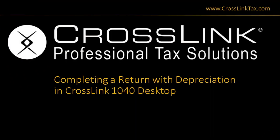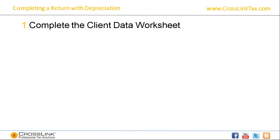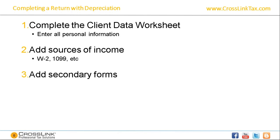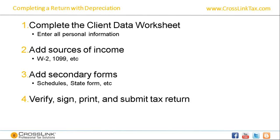Today we are going to be covering completing a return with depreciation in Crosslink 1040. The topics we will cover include how to complete the client data worksheet, entering all personal information, adding sources of income — anything related to W-2, 1099, and other sources of income — and secondary forms including Schedule C and Schedule E. At the end, we will cover verifying, signing, printing, and submitting the tax return.